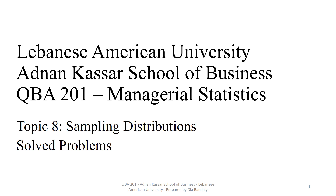Hi, in this set of videos we're going to solve some problems about sampling distribution. As explained in the lesson videos, sampling distribution is nothing but like any other distribution we have learned earlier. It represents the distribution about the mean of a sample, the proportion of a sample, or the difference between the means of two samples drawn from two different populations.